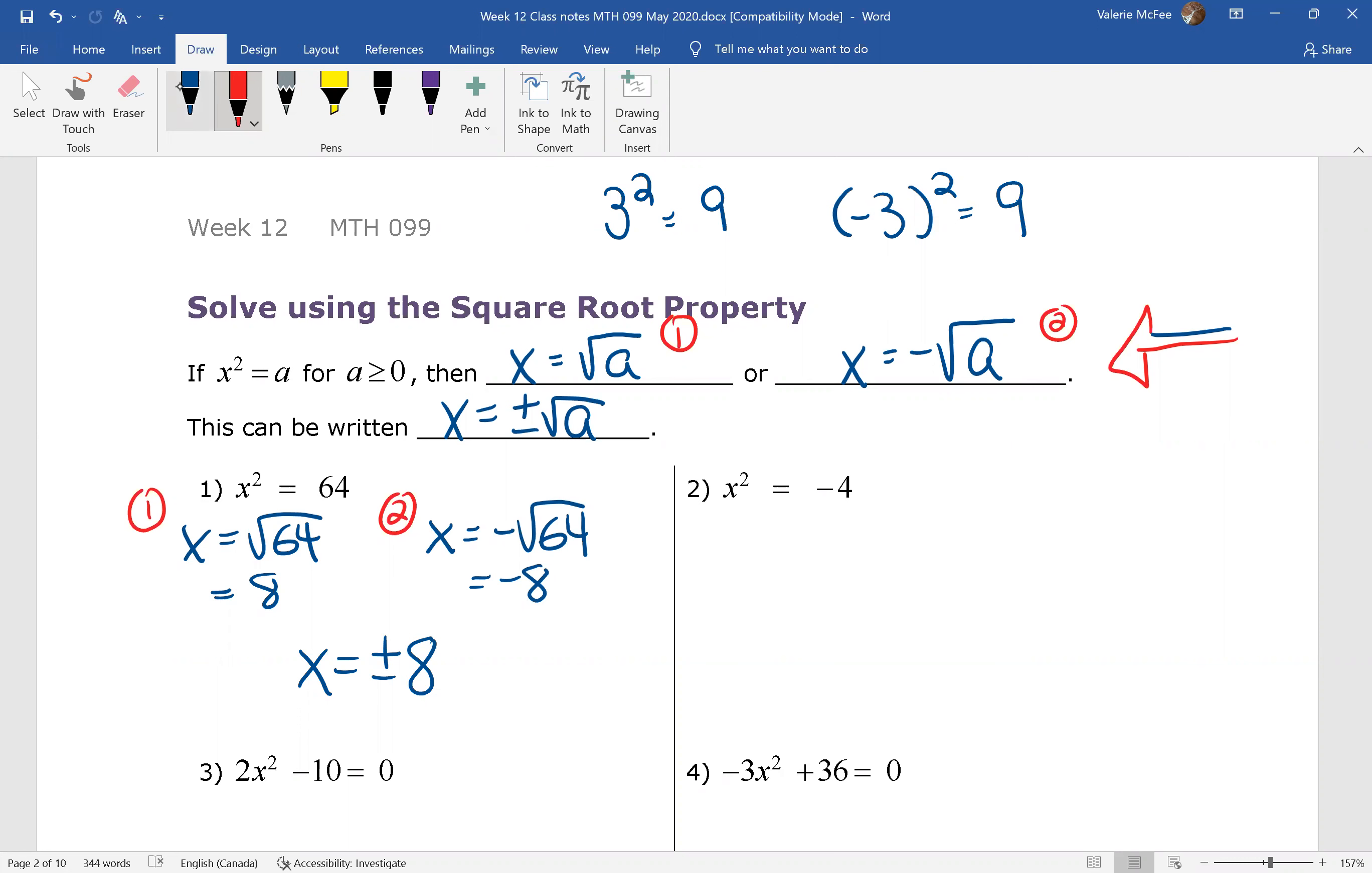Let's look at question two. x squared equals negative 4. Oh hang on. Are you noticing something? Did you notice this negative sign? Do you remember what we said here about a? a has to be greater than or equal to zero.